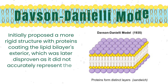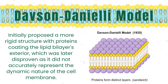Lastly, let's talk about the Davson-Danielli model. Initially, this model imagined the cell membrane as a bit more rigid, with proteins forming a sort of outer coat on the lipid bilayer. However, as our knowledge grew, we realized this wasn't quite accurate. We found out that the membrane is much more dynamic and flexible than initially thought, leading us to adopt the fluid mosaic model. So, this model taught us the importance of keeping our understanding up to date and accurate.